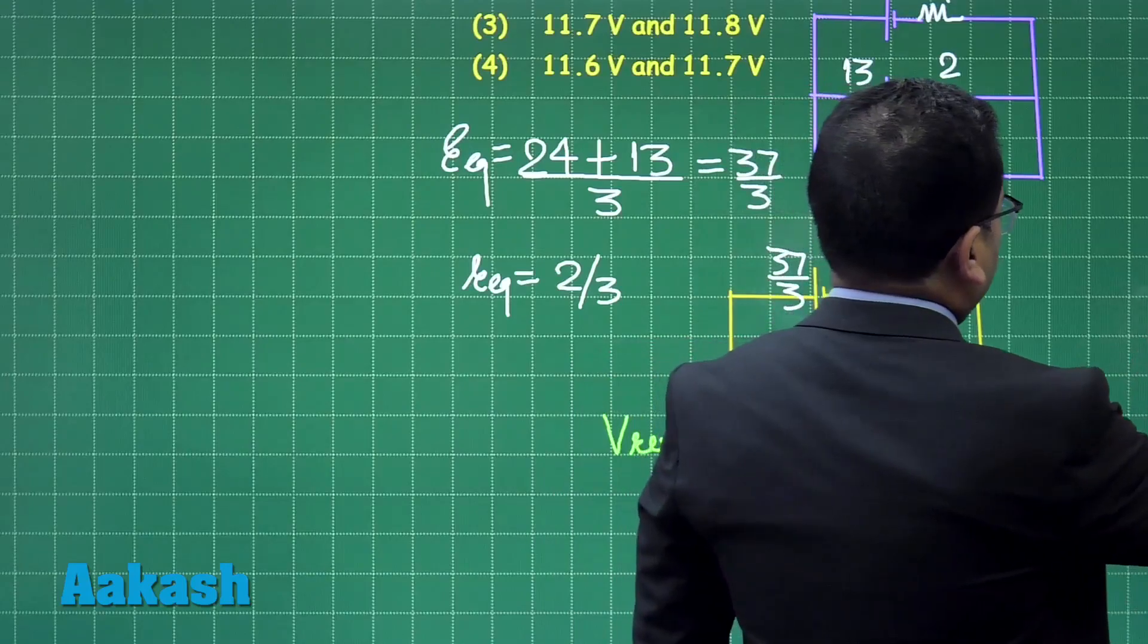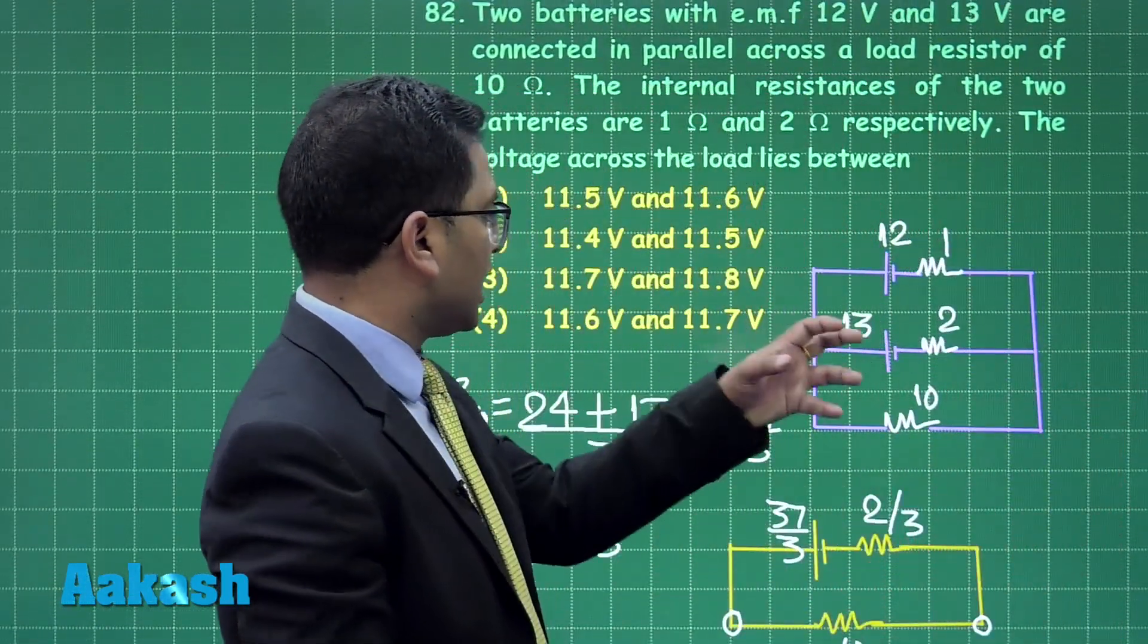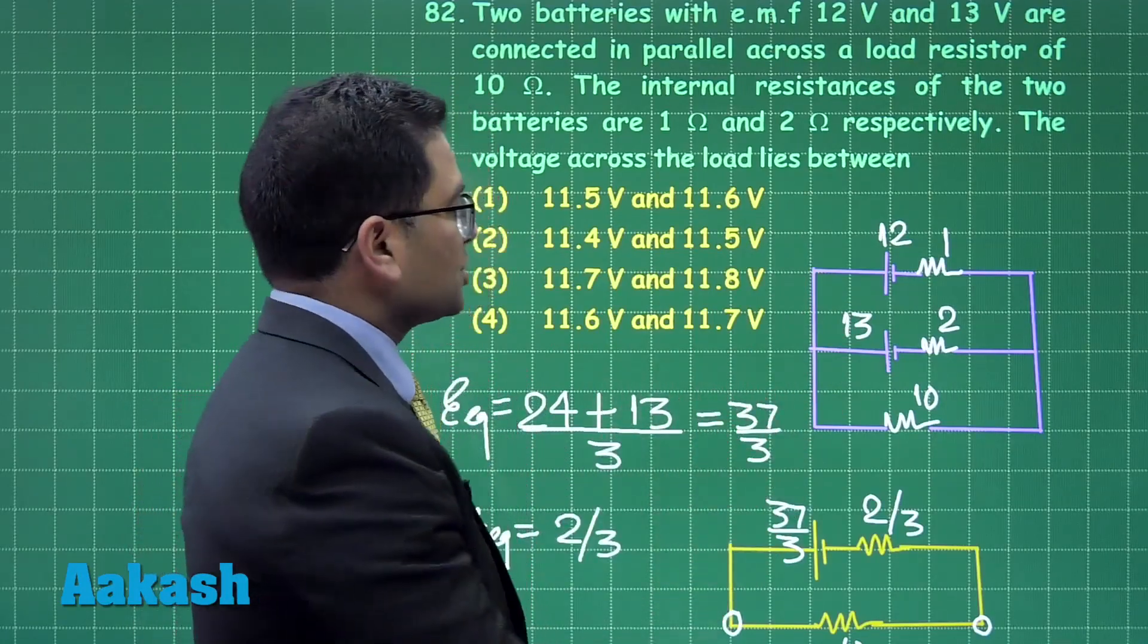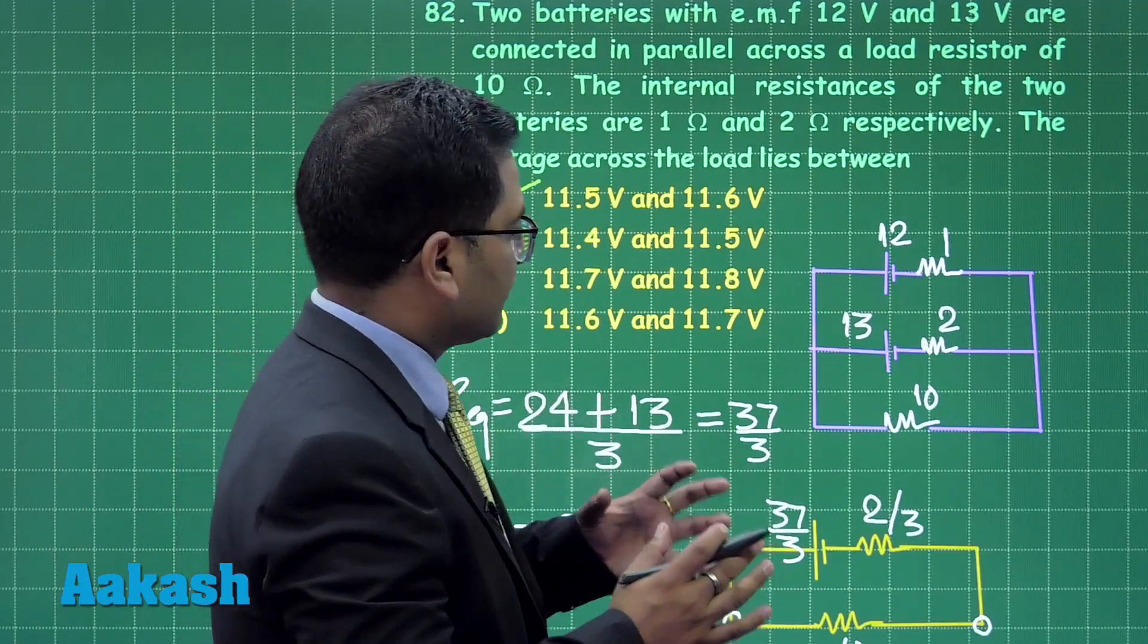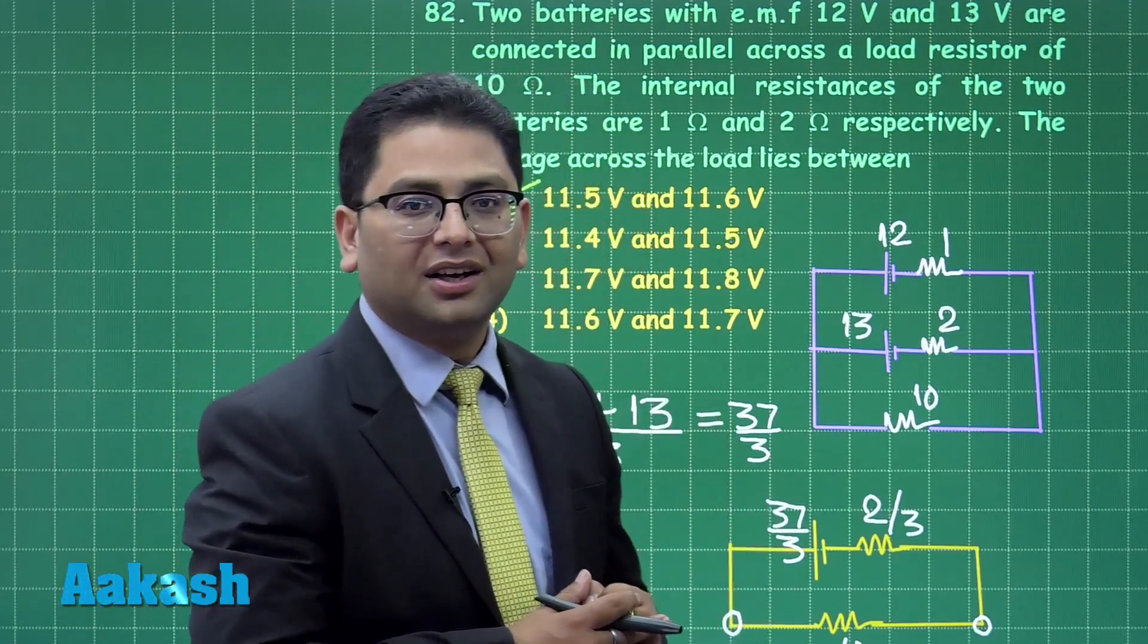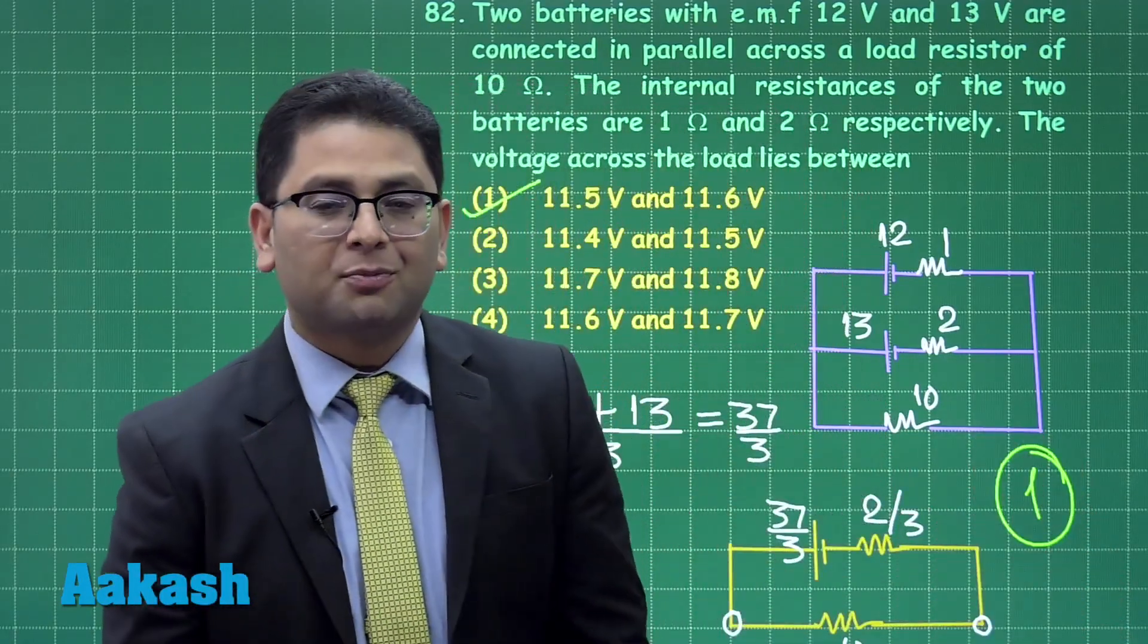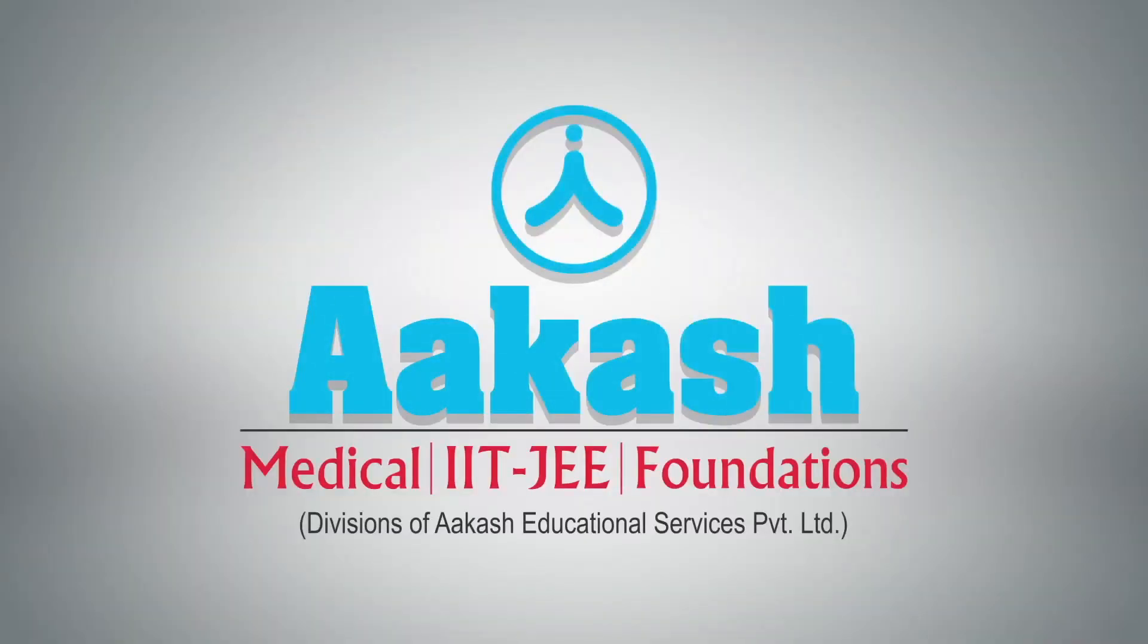The value comes 11.56, of course the unit which is volt, and yes, now 11.56 has to be chosen out of this. So no prize for guessing, that goes option number one. So the correct option for question number 82 is going to be option number one. Let's move for question number 83.